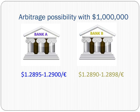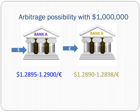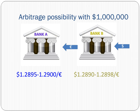Before we calculate arbitrage possibilities, let's review our strategy to make arbitrage profit when we have $1 million to work with. We can first choose to go to Bank A to sell dollars and buy euros, then go to Bank B to sell euros and buy dollars back. As an alternative, we can first go to Bank B to sell dollars and buy euros, then go to Bank A to sell euros and buy dollars back.